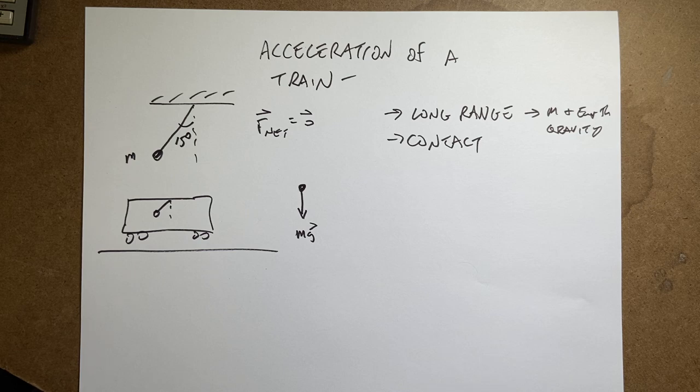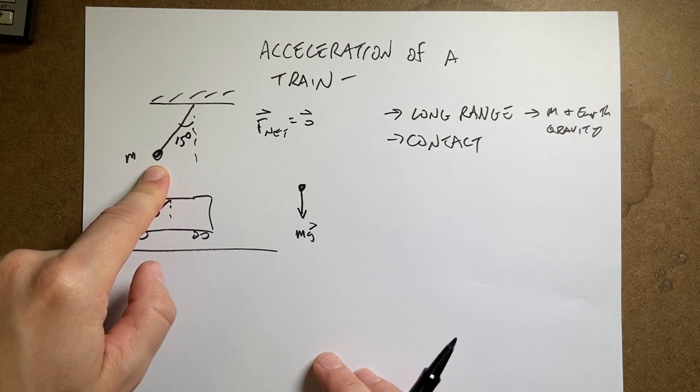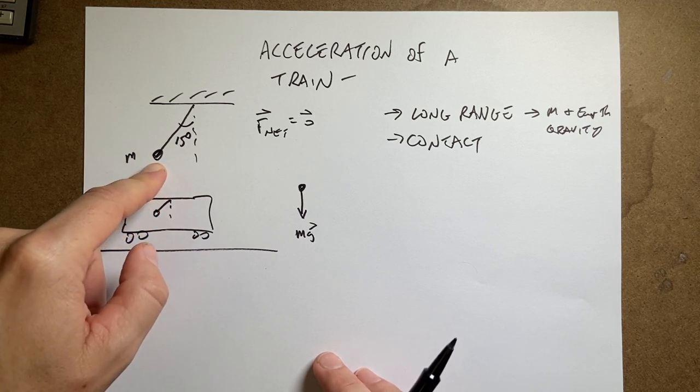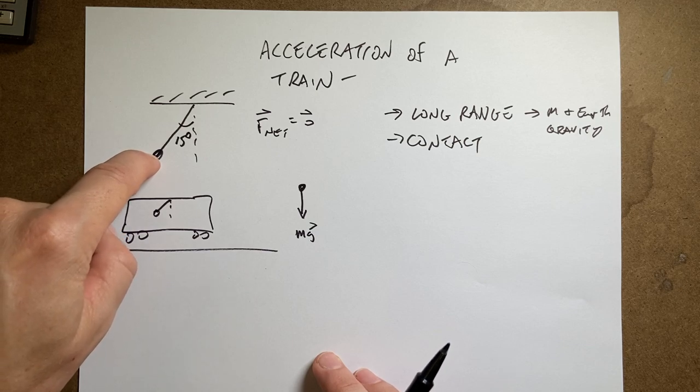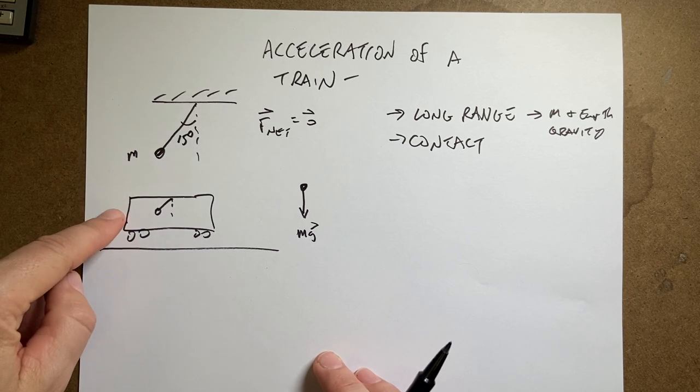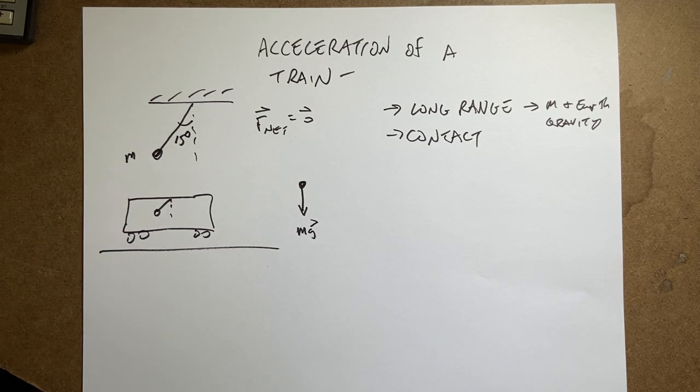So the first thing you might want to say is, well, shouldn't the net force on this object be zero? And that's not true. If you're in the train it might look like the mass is not accelerating. But the mass is accelerating because you're also accelerating in the train. So that's what's called a non-inertial reference frame. We use the force laws in an inertial reference frame. So that means not accelerating.